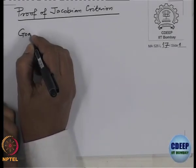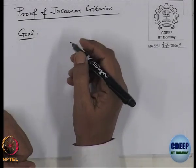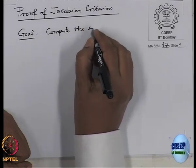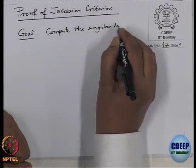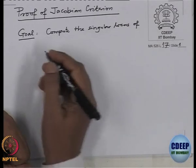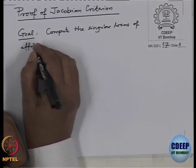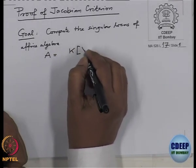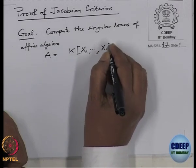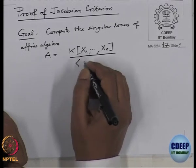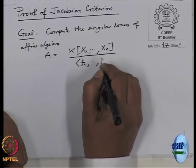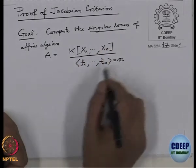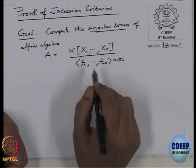We want to compute or calculate the singular locus of an affine algebra A, which is k[x1,...,xn] modulo some ideal. The ideal is finitely generated, therefore generated by some m polynomials. And what does one mean by singular locus? That means all those prime ideals in this affine algebra such that the localization there is a regular local ring.